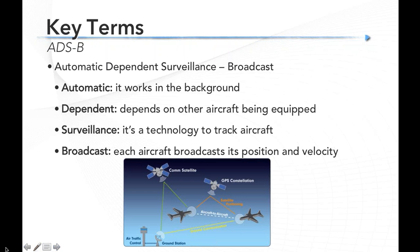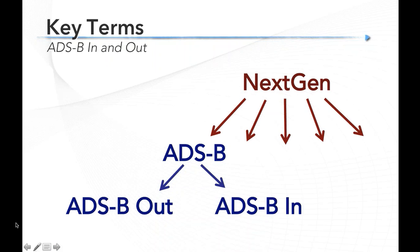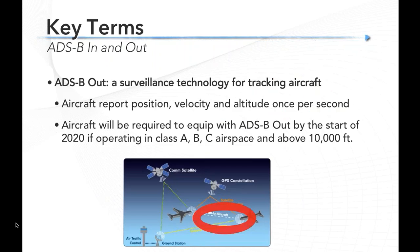There are two major parts to ADS-B: ADS-B out and ADS-B in. It's important to be clear upfront that ADS-B out is the only part mandated for 2020 — ADS-B in is optional. ADS-B out is a way to track aircraft: both you can track other aircraft, and ATC and other aircraft can track you. Aircraft required to equip will be in Classes A, B, C airspace, and above 10,000 feet.